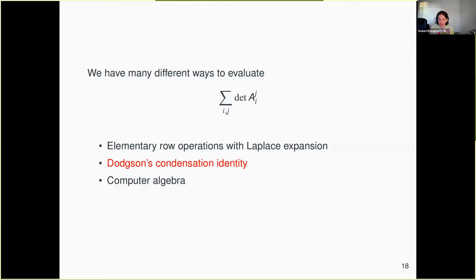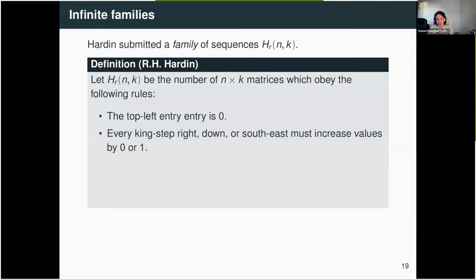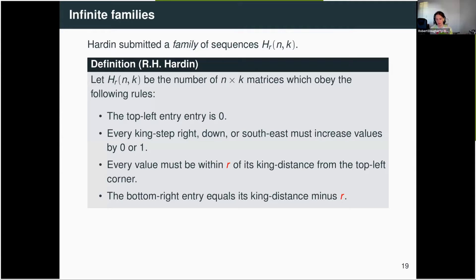What was the actual generalization of Hardin's sequences? I've been calling this initial sequence H_1, and the generalization is H_r. It counts almost exactly the same thing — the number of n by k matrices satisfying the following rules. The first rule is the same: the top left entry needs to be 0. The next rule is the same: every step to the right, down, or southeast has to increase the value by 0 or 1. The next rule is slightly different: every value needs to be within not 1, but within R of its king distance from the top left corner. And the final rule says the bottom right entry has to equal its king distance minus R.